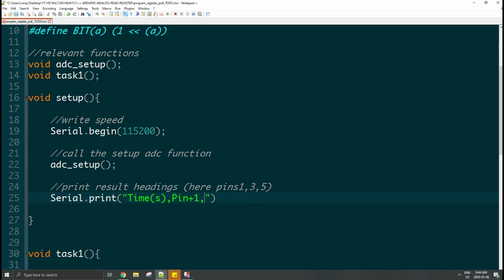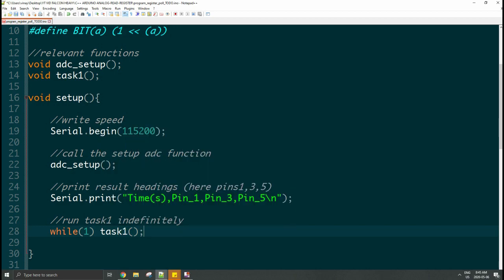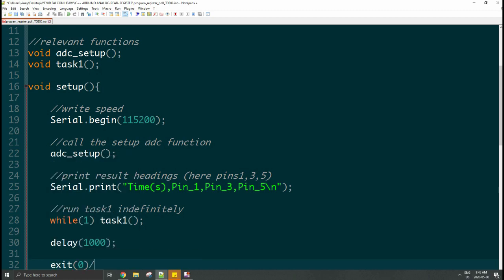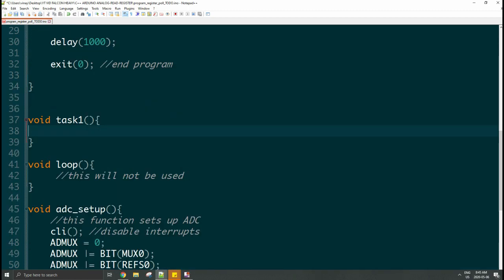This step here is optional. It's just to see what values you're printing, because this will only print once. The setup function only runs once. Then you will have the task 1 function, which runs indefinitely. That is analogous to your Arduino loop function. So you will put that inside a while loop, and then you can just exit the program when you press stop.